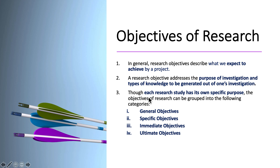Though each research study has its own specific purpose, the objectives of research can be grouped into the following categories: number one, general objectives; two, specific objectives; three, immediate objectives; and four, ultimate objectives.